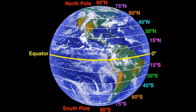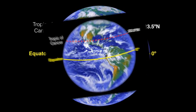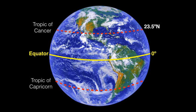But if we start at the equator and slowly travel north, we will come across the Tropic of Cancer, located at 23.5 degrees north. If we travel the same distance south, we will come across the Tropic of Capricorn. Everything located between the Tropic of Cancer and the Tropic of Capricorn is known as the tropics.